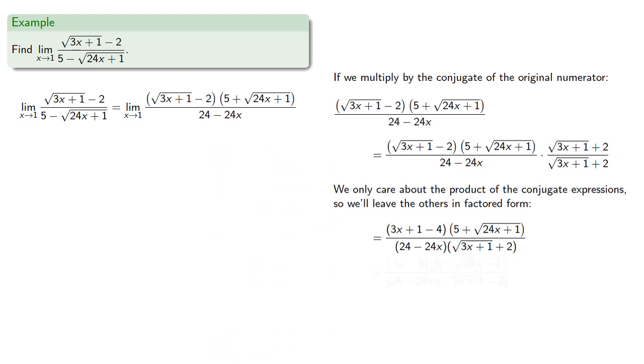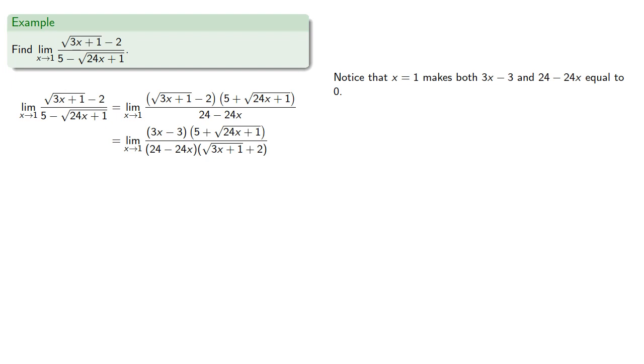And simplify. And we note that x equals 1 makes 3x minus 3 and 24 minus 24x equal to 0. So again,